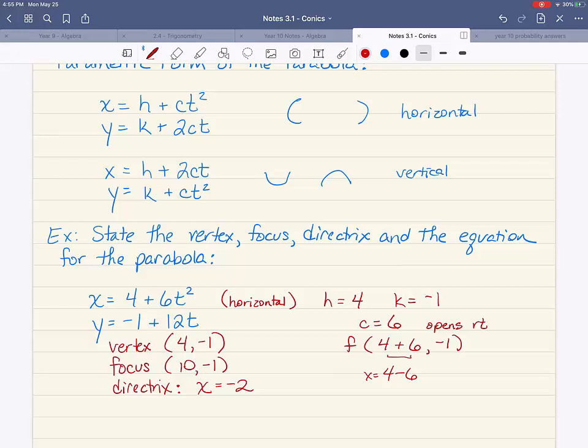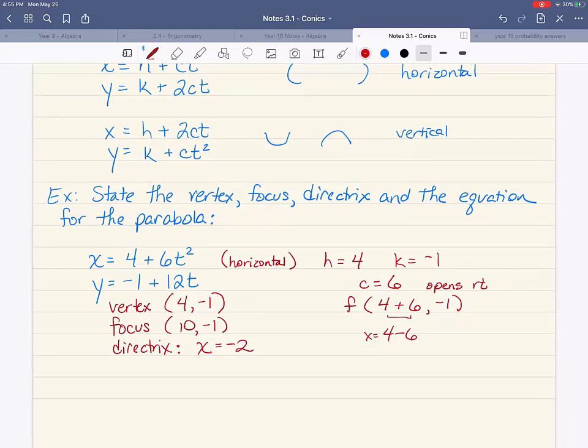So now I have the vertex, the focus and the directrix for this problem. And now I need to write it in Cartesian form. And the equation is going to be as follows. It's going to be some bracket squared and equals a number and then another bracket.